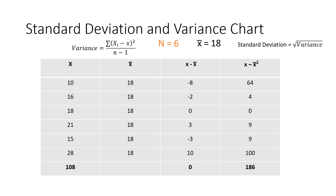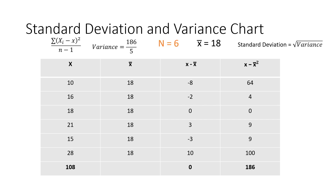We then take all of our values and come up with our totals row. To find the variance, we must take the total of our x minus x-bar squared and divide it by n minus 1, or 6 minus 1. 186 divided by 5 gives us 37.2.